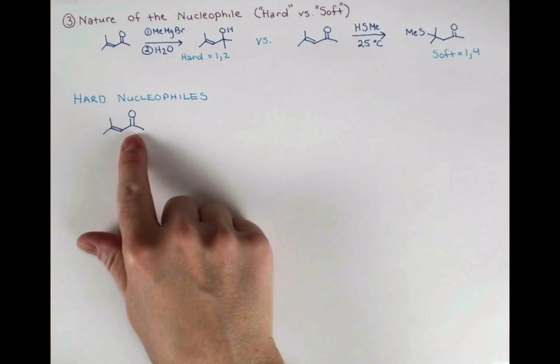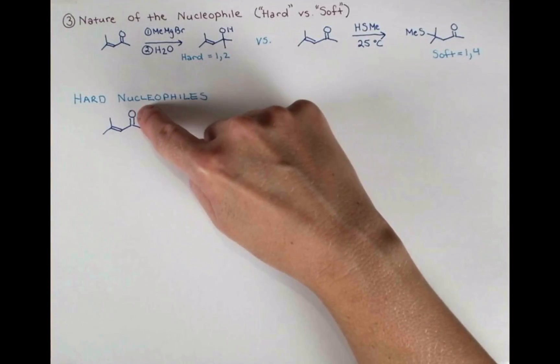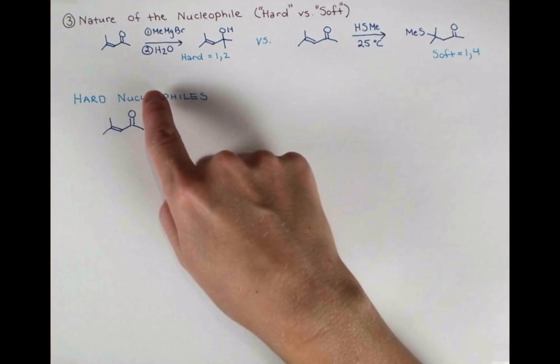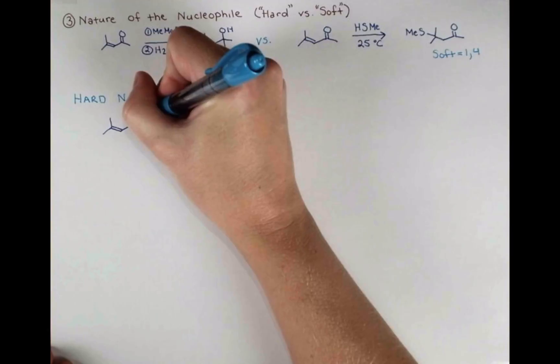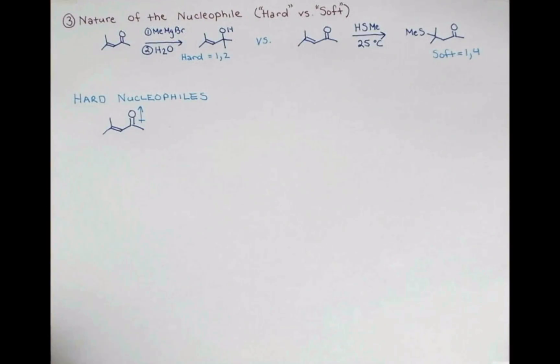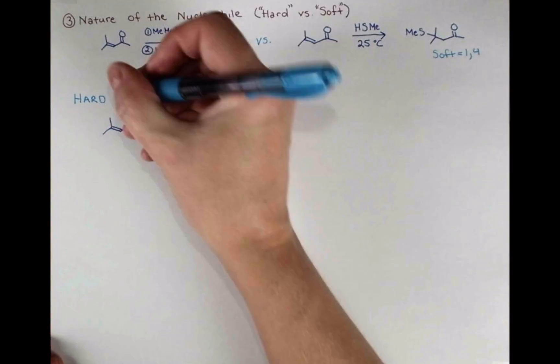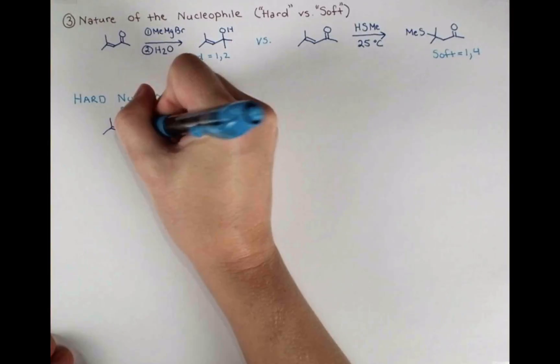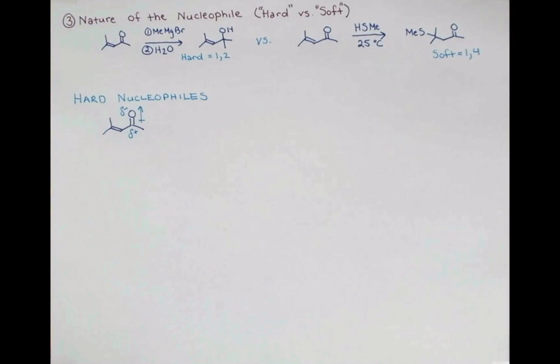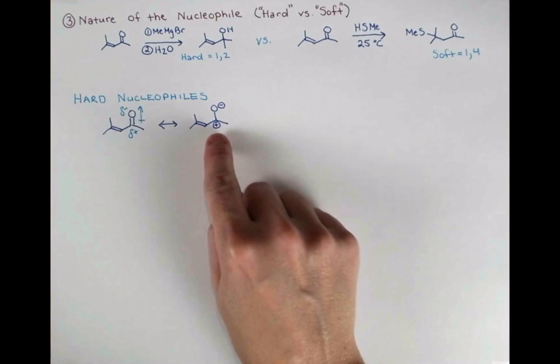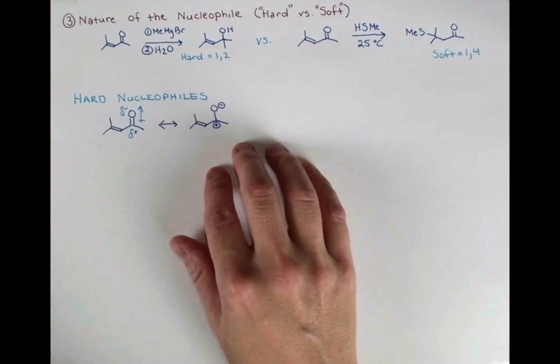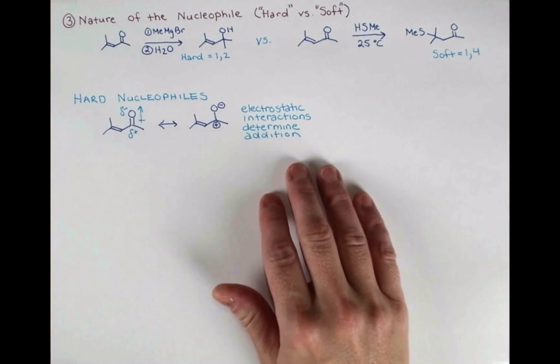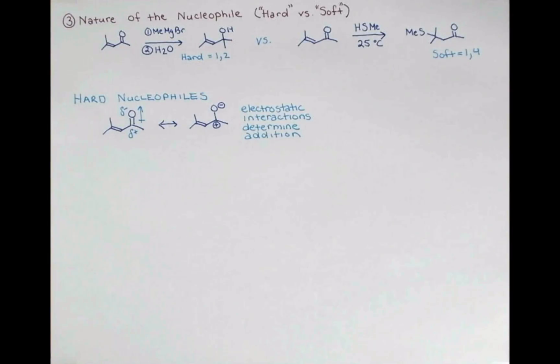Now our enone contains a ketone and ketones have this nice dipole. There's this electronegative atom double bonded and so what happens is we get a dipole going in this direction. This makes the oxygen partially negative and this carbon consequently is partially positive. We can even draw a resonance form that puts formal negative charge on the oxygen and formal positive charge on the carbon. Now for a nucleophile to add here, to add 1-2, the dominating factor needs to be electrostatic interactions. Hard nucleophiles will add 1-2 because these tend to be small nucleophiles with a lot of charge concentrated on a small atom. Let's look at some examples.